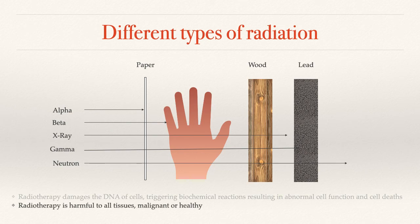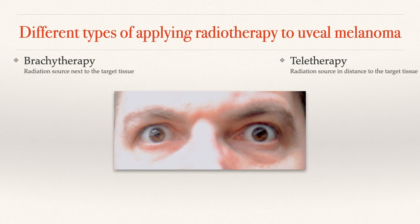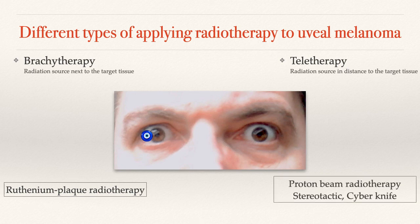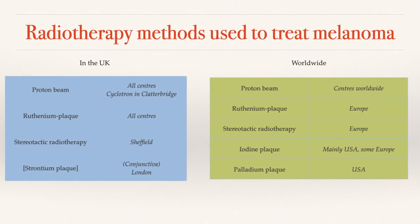So how can we treat tumours of the eye with radiotherapy? Either we apply the source of radiation right close to the eye, close to the tumour — that's called brachytherapy, which for us involves suturing a radioactive metal disc called a plaque onto the eye. The alternative is to use a radiation source from outside the eye to aim a beam of radiation towards the eye, and there are various sources of radiation that you can use.